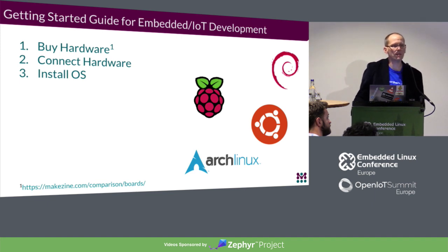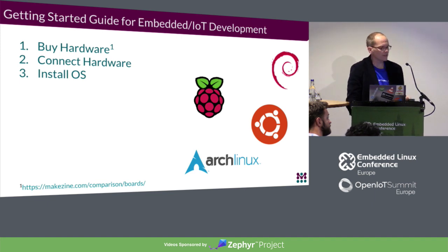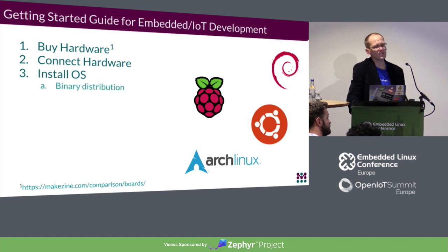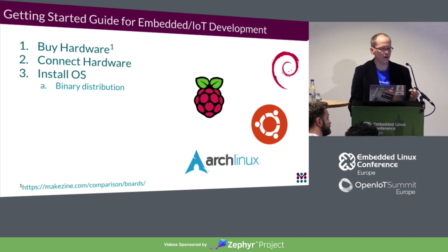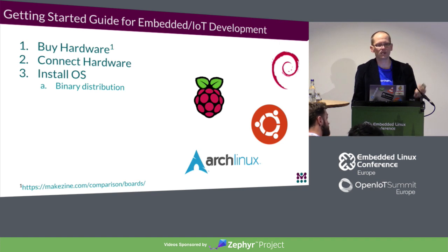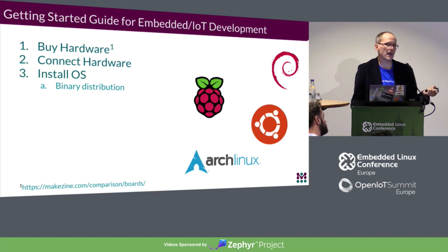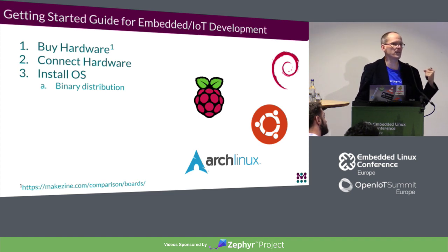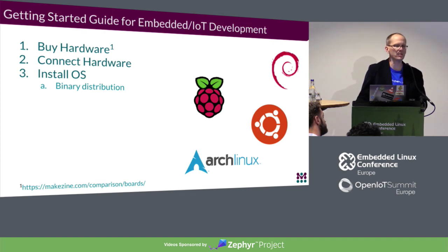Once you've got the hardware connected in your lab, you need to install the operating system. In the embedded Linux space, there are three main ways to get a target OS. One is to use a binary distribution — very much like you do on your desktop: you go to Ubuntu.org or Debian.org, download a binary image, write it using the DD utility to your SD card, boot it, and go from there. At that point you've got a fully functioning system — you can run apt-get update, get the latest kernels, and install whatever programming languages you need.